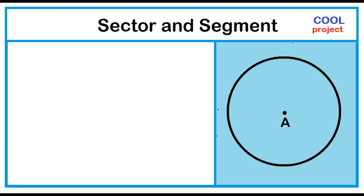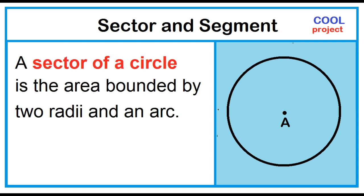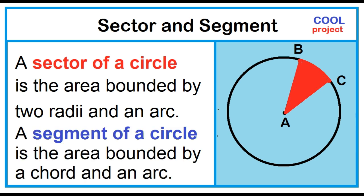Sector and segment. A sector of a circle is the area bounded by two radii and an arc. A segment of a circle is the area bounded by a chord and an arc.